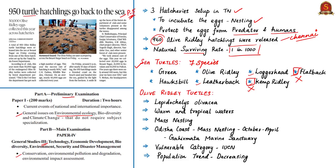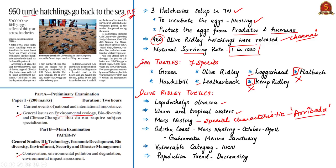Let us now discuss the Olive Ridley turtles. The scientific name is Lepidochelys olivacea. They predominantly live in warm and tropical waters. These turtles, along with kemp ridley turtles, are known for a special characteristic: mass nesting of female olive ridley sea turtles on beaches, also known as aribada — meaning 'arrival' in Spanish. In India, the Odisha coast is known for mass nesting during the months of April and October. The Gahirmatha Marine Sanctuary is specially known for mass nesting.